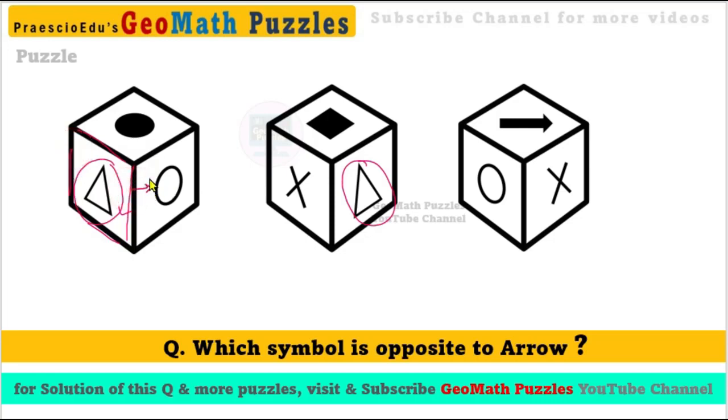One side there is a circle, another side there is a dot. So if we consider the triangle, the solid dot we already considered and the hollow circle we already considered. Now this triangle has another adjacent side.